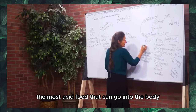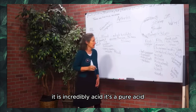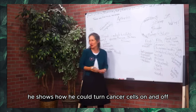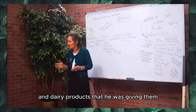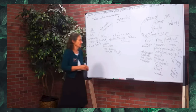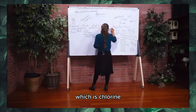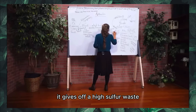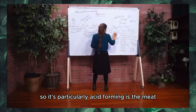The most acid food you can put into your body is pure crystallized sugar extracted from the sugarcane plant — it is incredibly acid. Also meat: Dr. Colin Campbell in his book the China Study shows how he could turn cancer cells on and off by the amount of meat and dairy products given, because cancer loves an acid environment. These acid foods are high in acid-forming minerals — chlorine, phosphorus, and sulfur. When meat breaks down in the body it gives off a high-sulfur waste, making it particularly acid-forming.